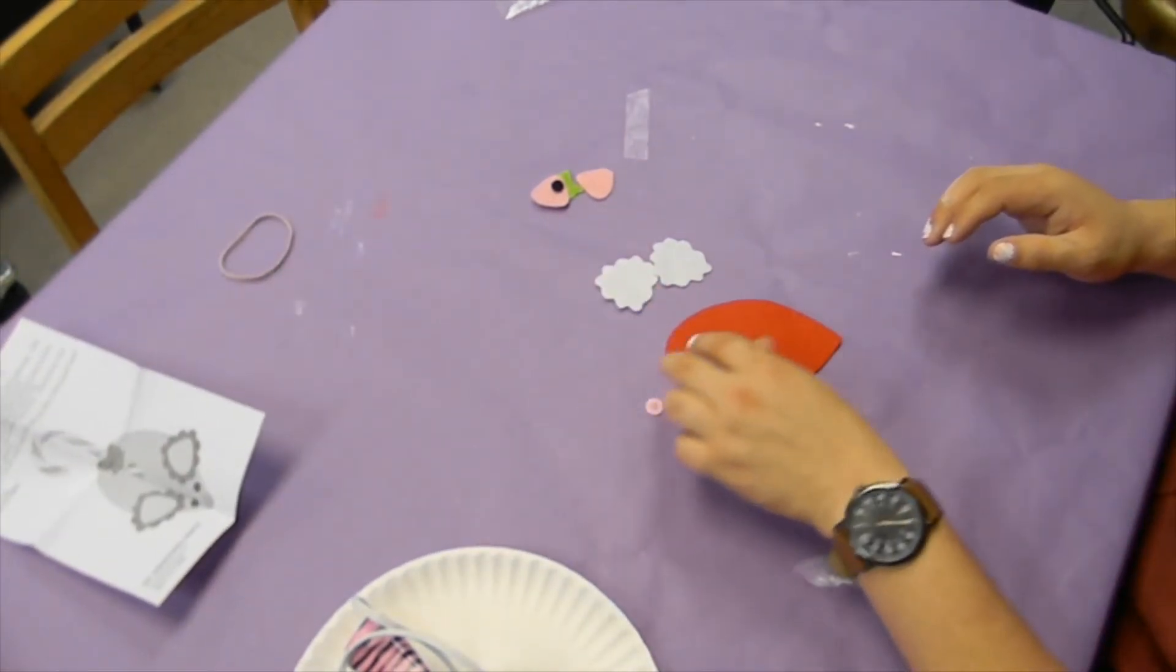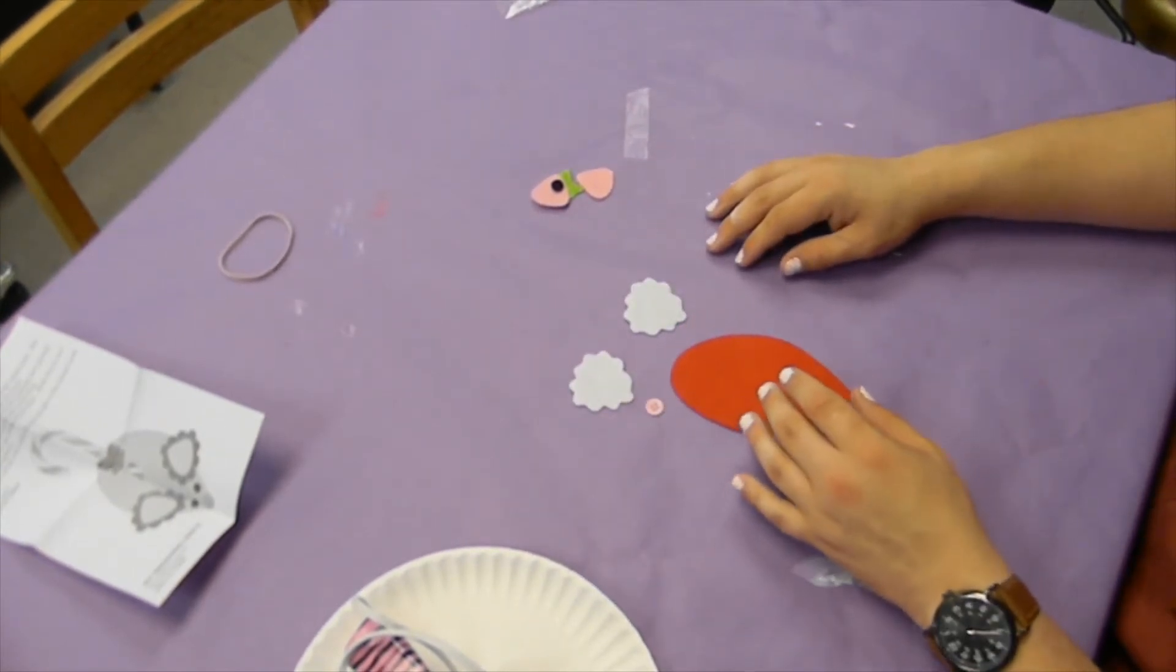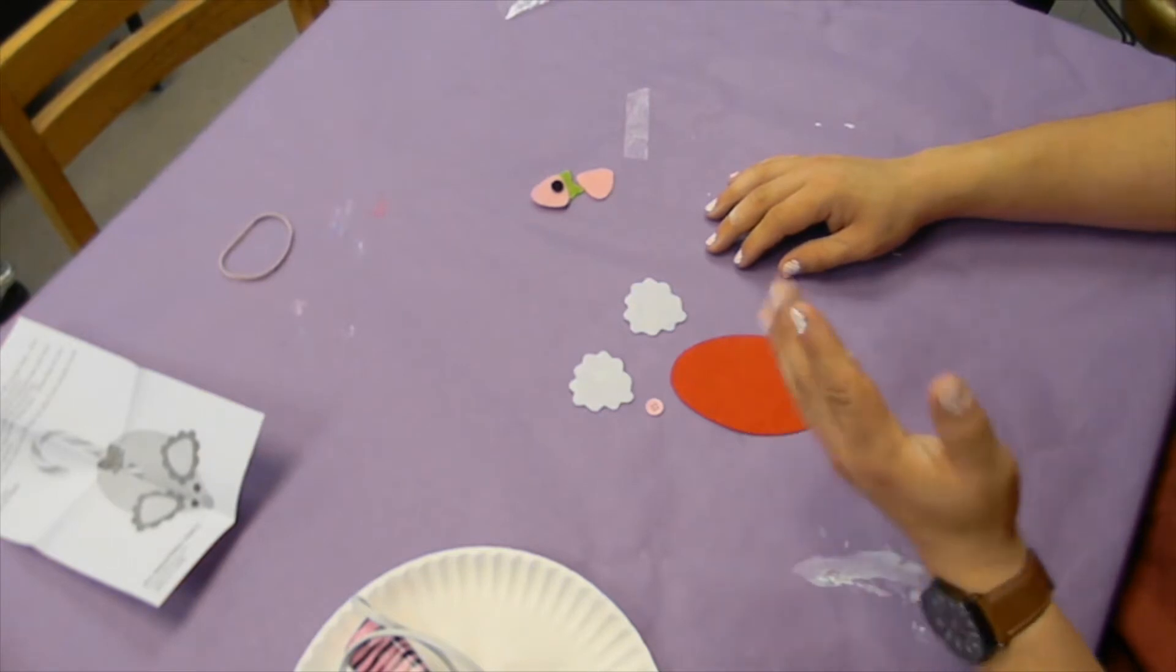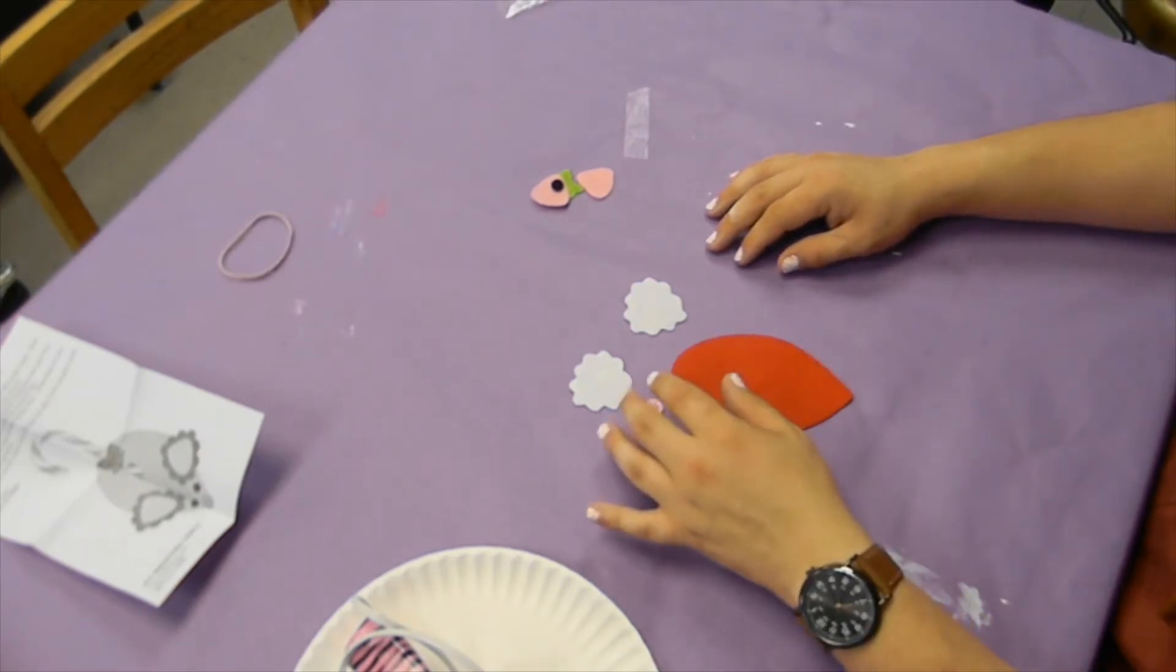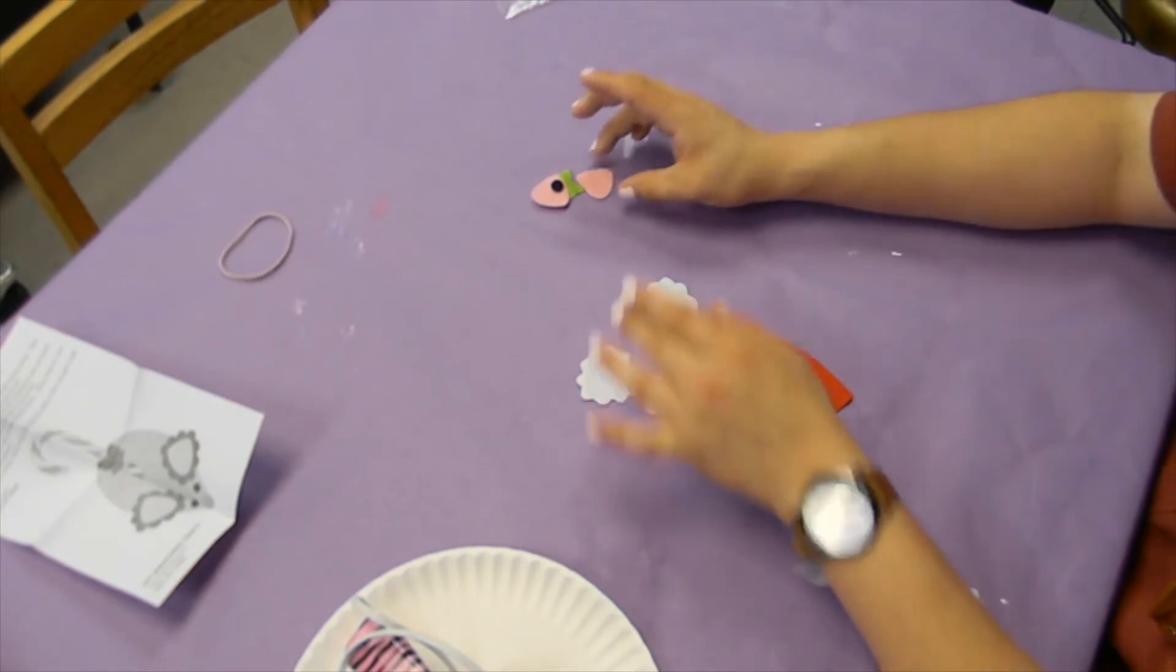You're going to get one button. That's going to be the nose. You're going to get these two little tufts of white, I don't know what this material is. Foam? Not foam. Something. Anyway, you're going to get these two white tufts of it, and those are going to be the ears.